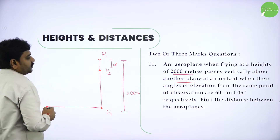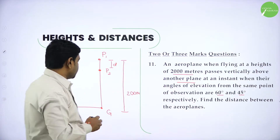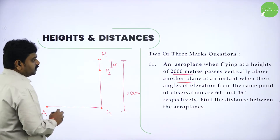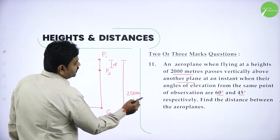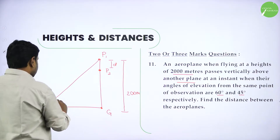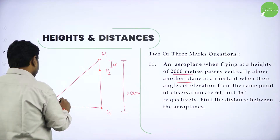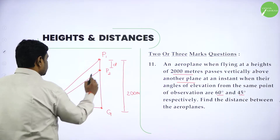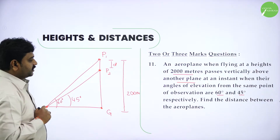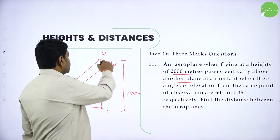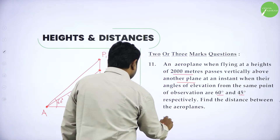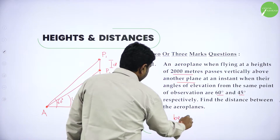From the same point of observation, the angles of elevation are 60 degrees and 45 degrees. The first plane at 2000 meters is at 60 degrees and the other plane P2 is at 45 degrees. This is the basic diagram. From this we need to find the distance between the planes, so let D be the distance between them.